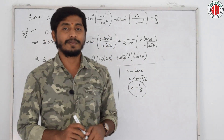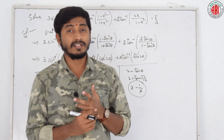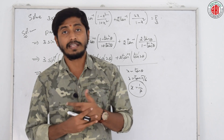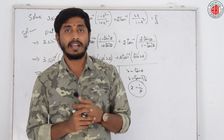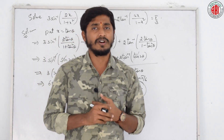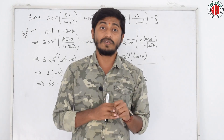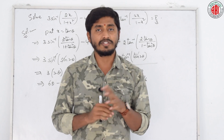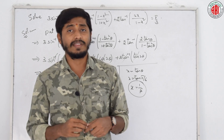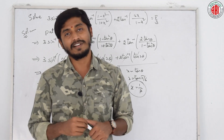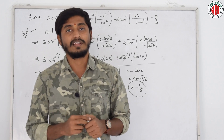This concludes the chapter on inverse trigonometric functions. We started with basic definitions of inverse functions, discussed different formulas, solved problems involving sin inverse and cos inverse, and proved various identities including problems with three ratios. By this, we have ended the chapter on inverse trigonometric functions. Let us meet in the next session with a new chapter of trigonometry. Thank you.